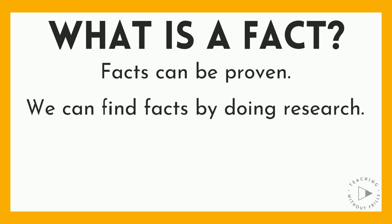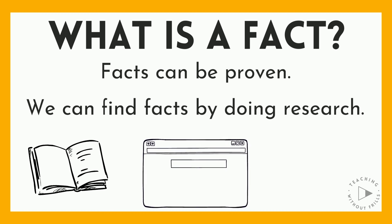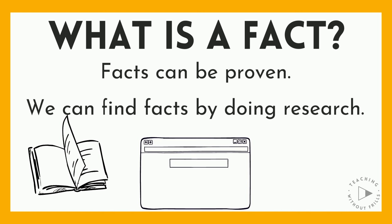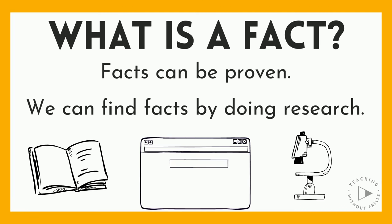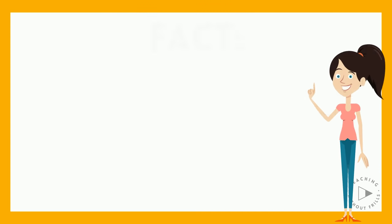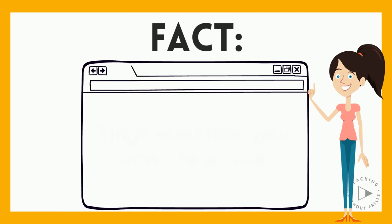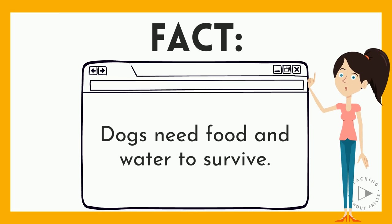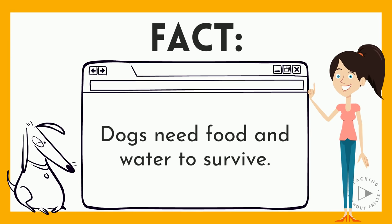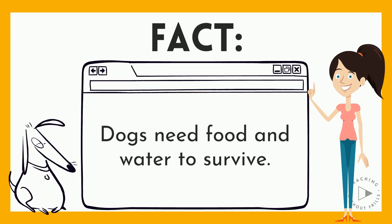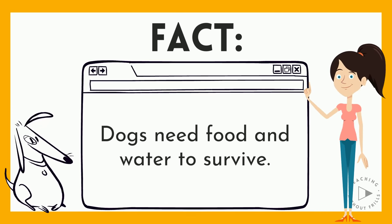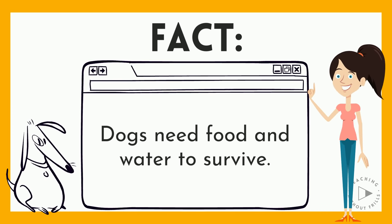We can find facts by doing research in books or on the internet, or we can even do research of our own. Here's an example of a fact: Dogs need food and water to survive. This is a fact because it's always true, and you can prove it by doing research.